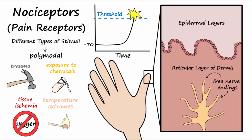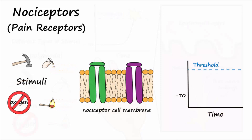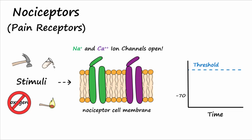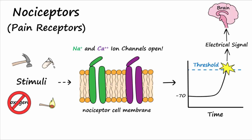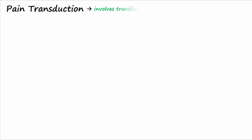These stimuli ultimately lead to the opening of sodium and calcium ion channels in those receptors, allowing the nociceptor to reach threshold and convert the initial stimulus into an electrical signal that can be sent to the brain. Remember that transduction involves transforming one form of energy into another.